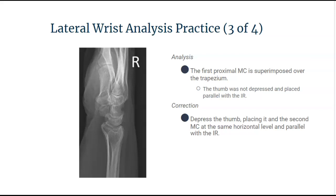Looking at this lateral wrist projection, we can tell that a lot of the elements meet evaluation criteria. This wrist looks like it's in a true lateral projection — the articulation is demonstrated superimposed, the carpals are superimposed, and the scaphoid and pisiform are in alignment. However, when you look at the trapezium, there is an issue. The thumb is superimposing over the trapezium and it should be in profile. This lets me know that the thumb was not depressed and placed parallel with the IR. In order to correct this positioning, depress the thumb and repeat the image because the trapezium should be demonstrated in profile.